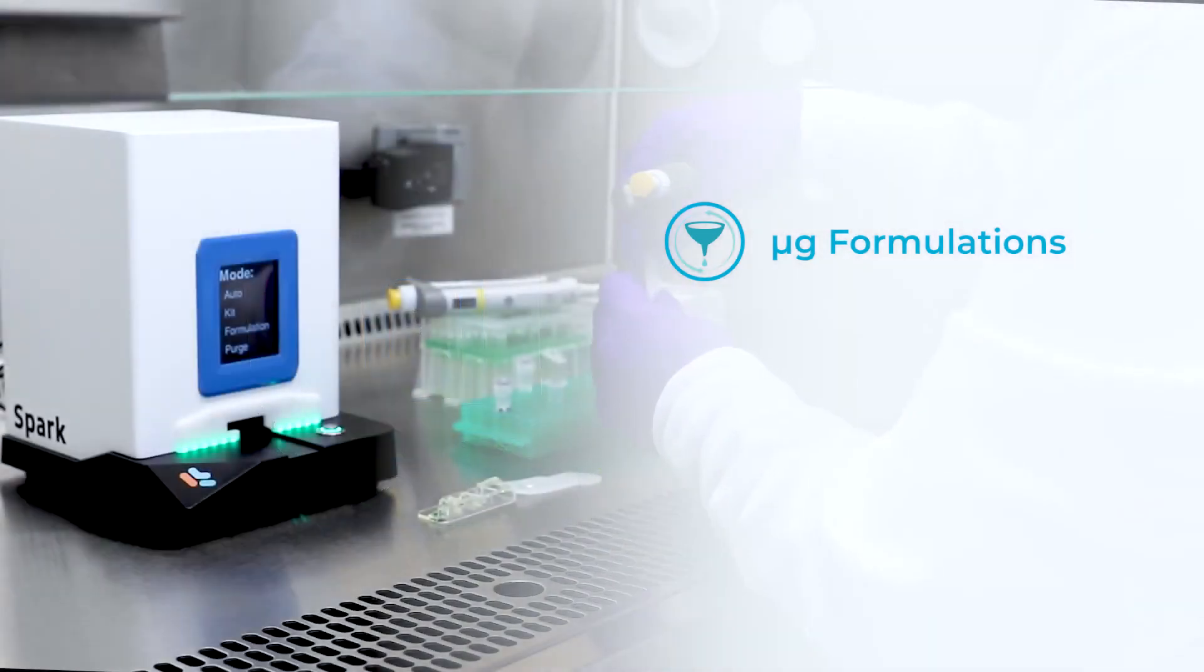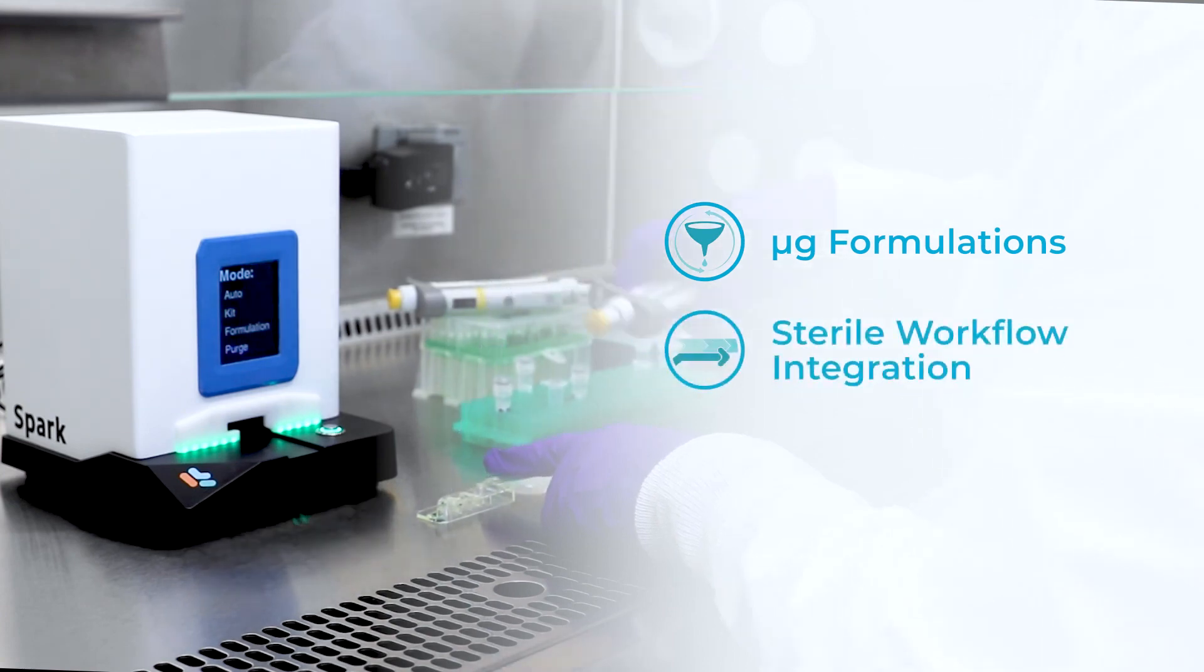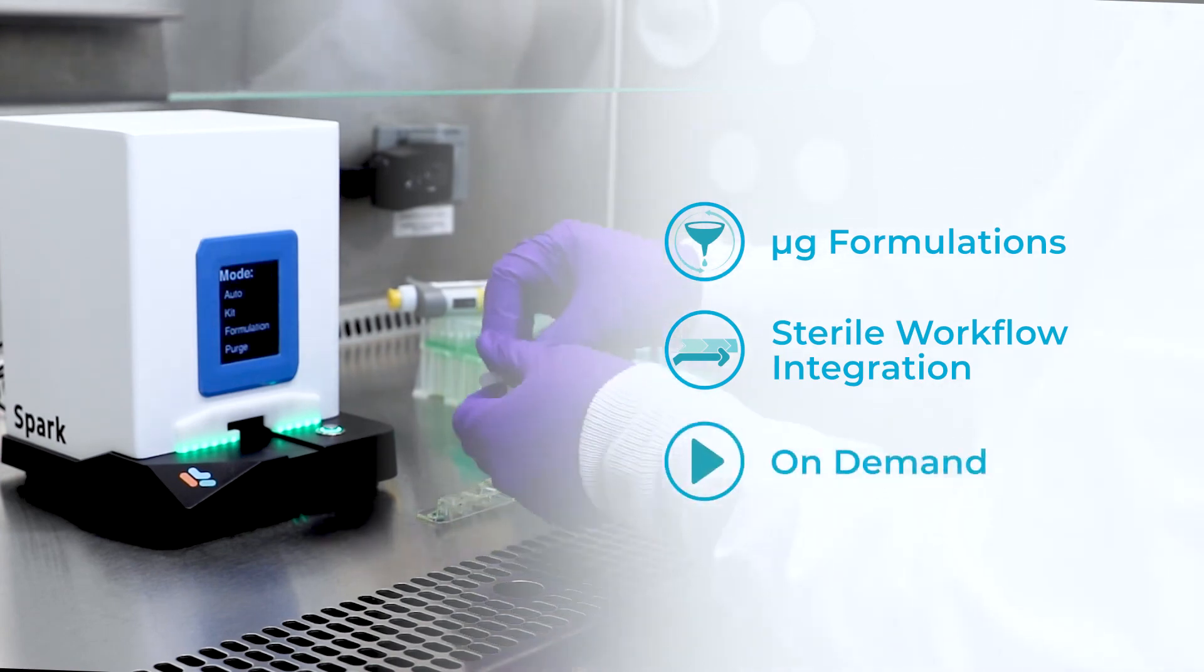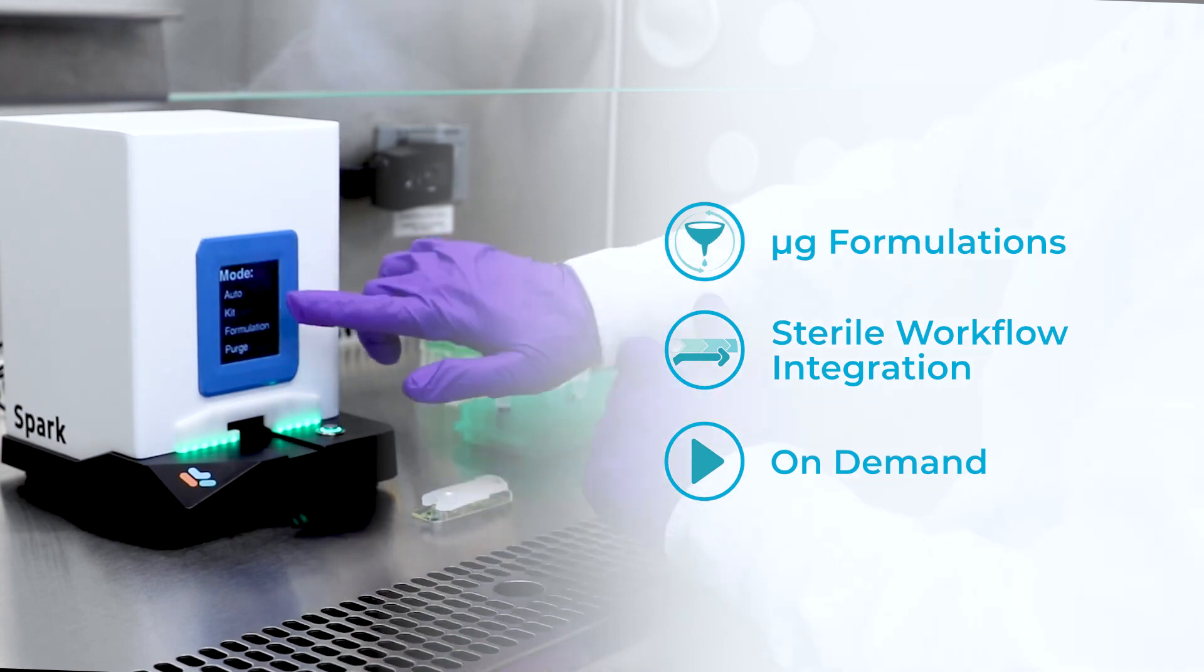The NanoAssembler Spark is specifically designed for in vitro and ex vivo screening. With simple operation and gamma irradiated cartridges, Spark integrates seamlessly into a sterile cell culture workflow, empowering on-demand formulations to accelerate discovery and early preclinical development of RNA lipid nanoparticles.